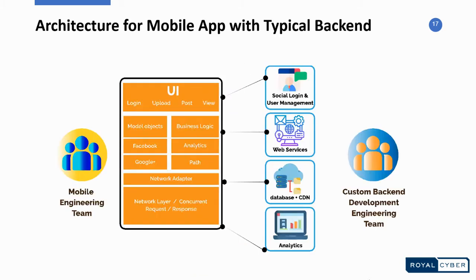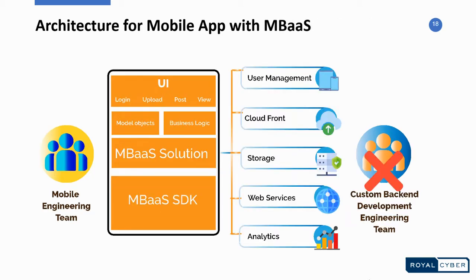Let's take a look at the architecture. This is an architecture for a mobile app with a typical back-end — the application is individually connecting with social log-in, user management, web services, database, analytics, and more, while also requiring a custom back-end development team. Now let's look at the architecture for a mobile app with Mobile Backend as a Service: all these back-end services are attached through one unified API or SDK, and you don't need a custom back-end team.